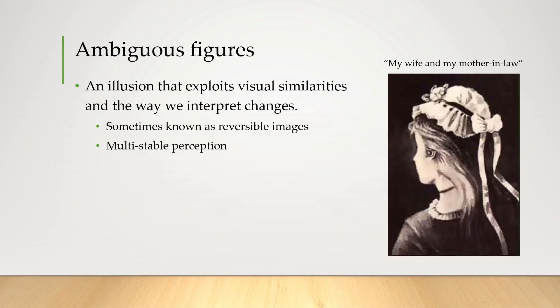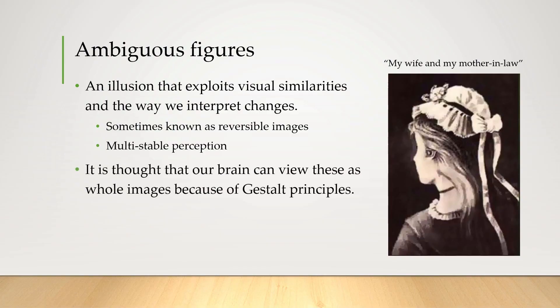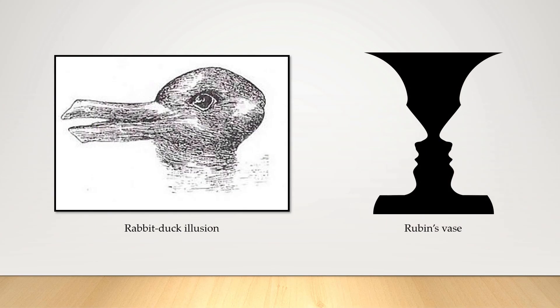But if you're finding it hard to swap between the two, in one of them the nose is that point over there, and then the other one, this whole bit here is the nose. It's thought that our brain can view these ambiguous figures as whole images because of Gestalt principles. Here are two more examples of ambiguous features: the rabbit-duck illusion and Rubin's vase. Or vase. Whoa, multi-stable stuff going on right there.